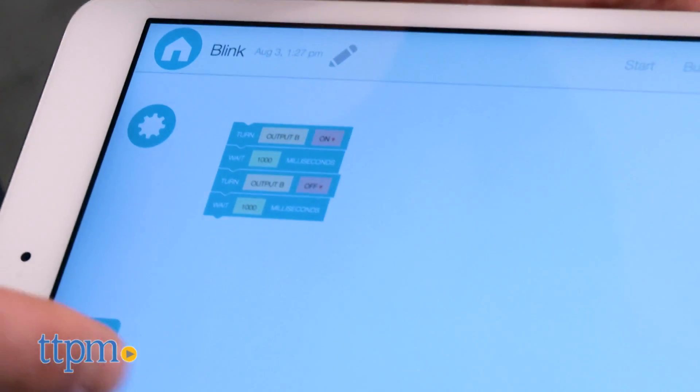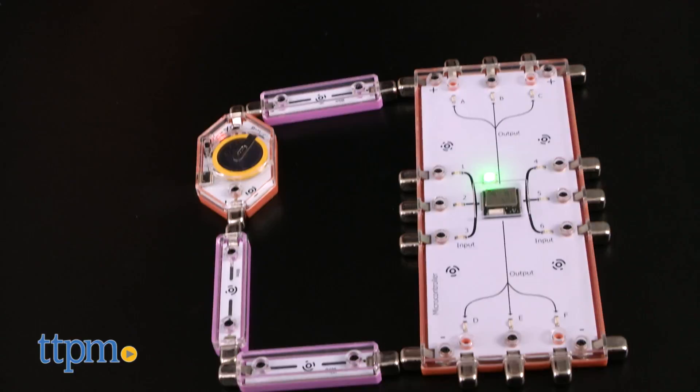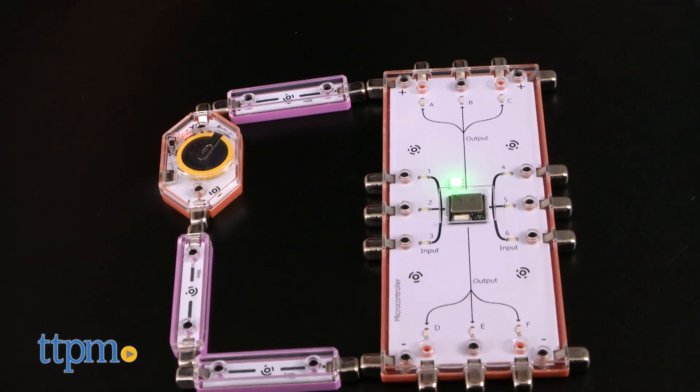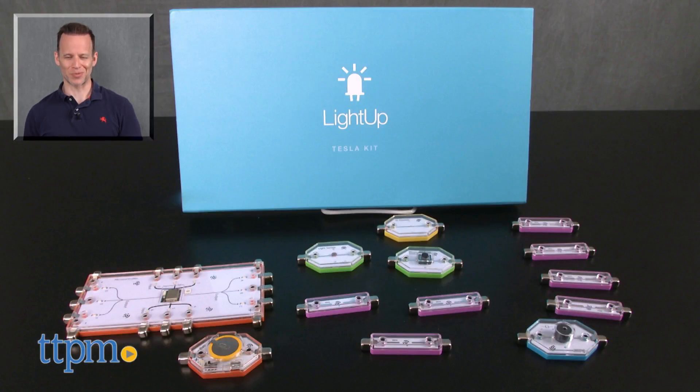Also available, a USB version that requires a desktop computer and a special driver, which you can download for free. There's also a smaller Edison kit for younger kids to get started. For where to buy and current pricing, find us at TTPM.com, or subscribe to our YouTube channels for more great reviews every day.